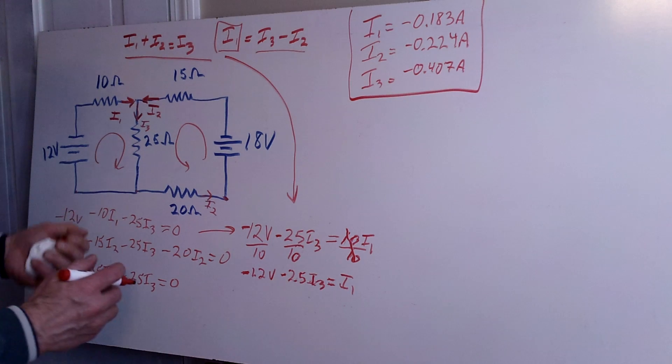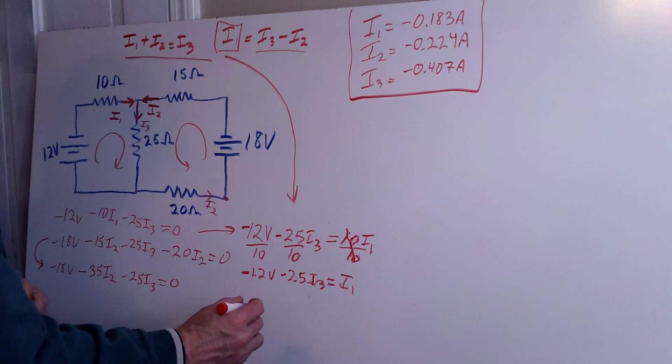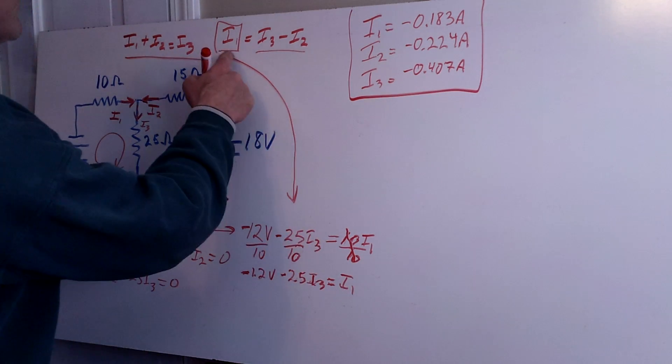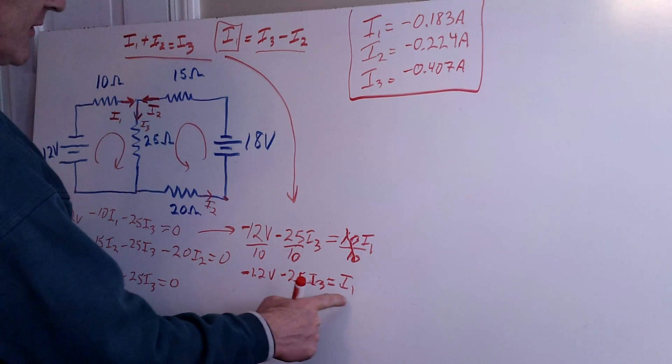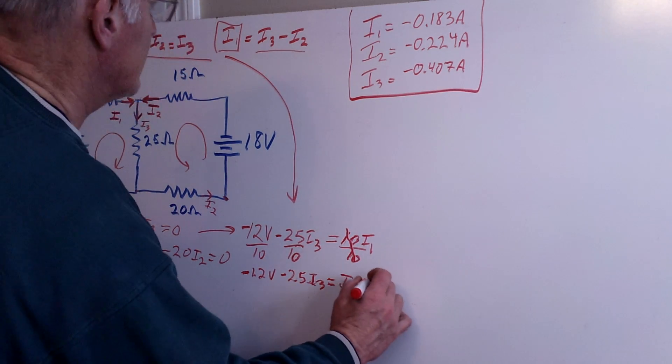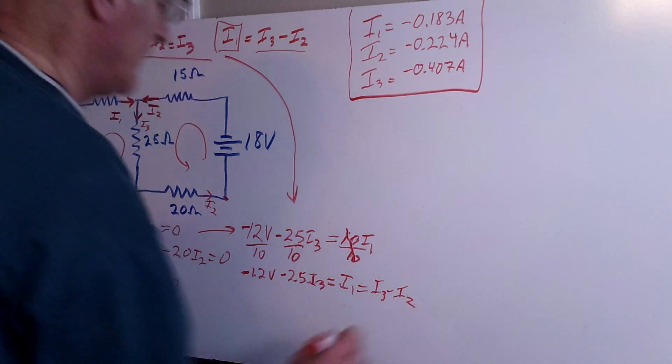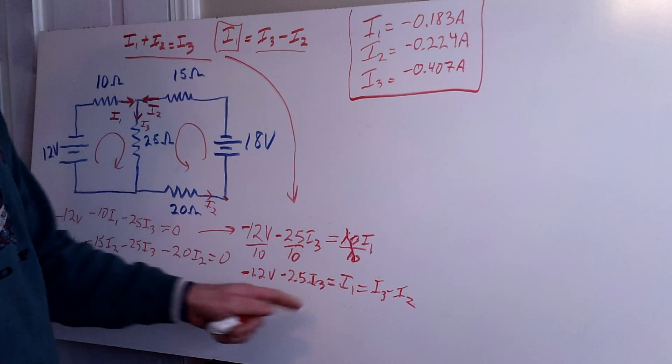Okay, and so now the next thing I'm going to do is I'm going to take this and substitute into this equation right here. So I1 is equal to I3 minus I2. I1 is also equal to this part of the equation. So I just set this equal to I3 minus I2.